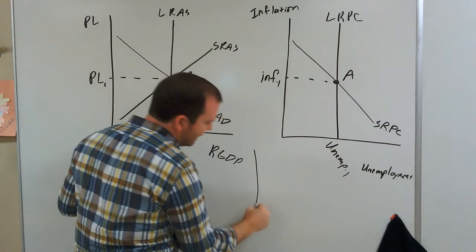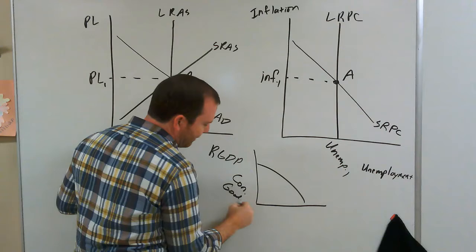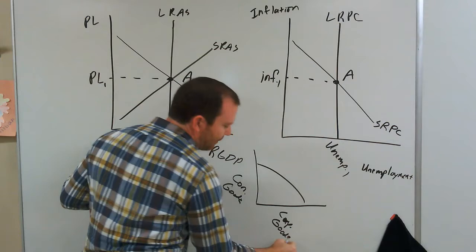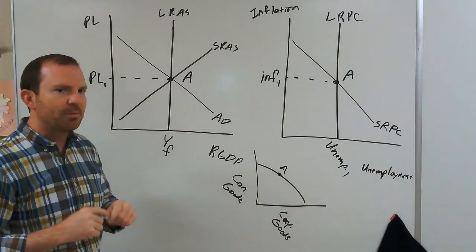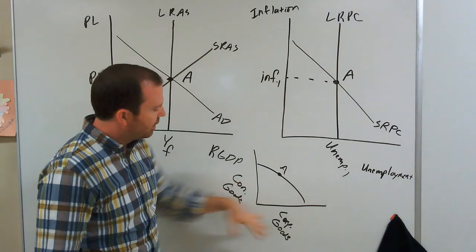And then finally we can add in this last graph — the production possibilities curve, with consumer goods and capital goods. If we're operating at point A on the other graphs, then on the PPC we're also right on the curve at point A. So all three of these graphs are showing us the same thing, just with different variables: output and price level on the first, inflation and unemployment on the second, consumer goods and capital goods on the third.